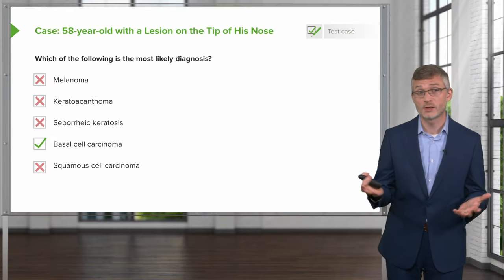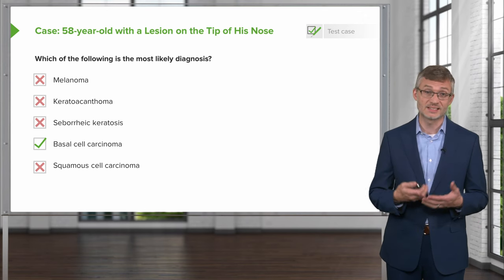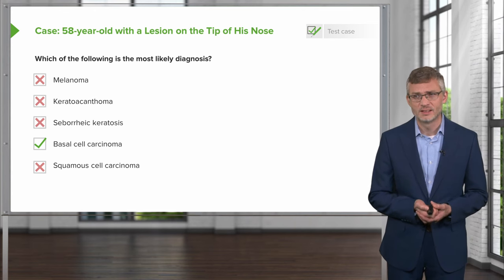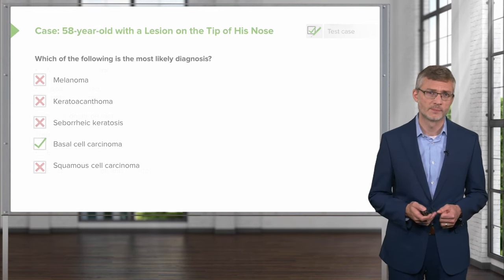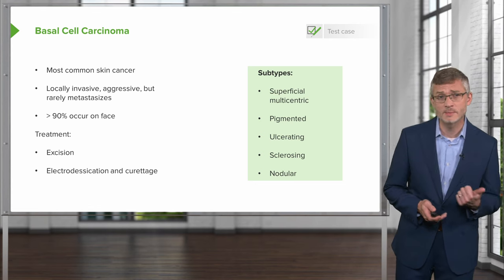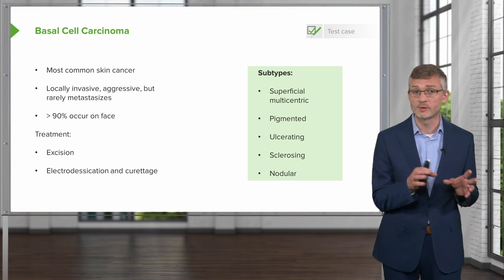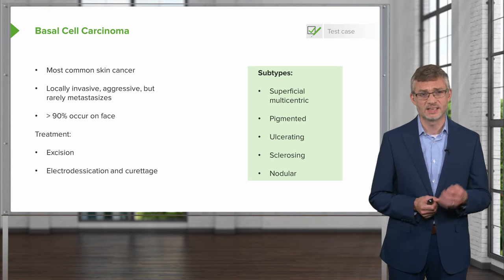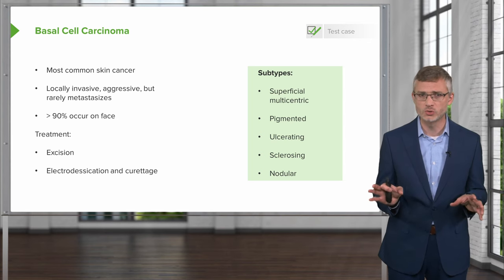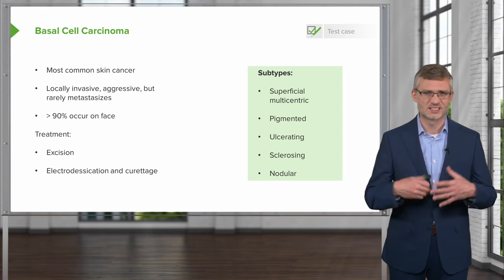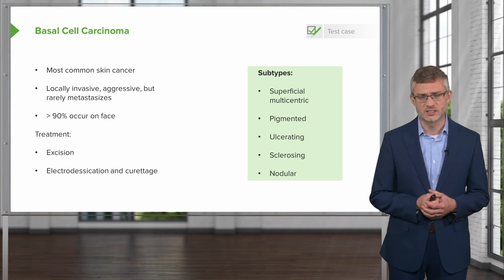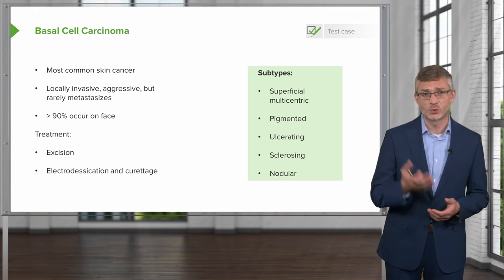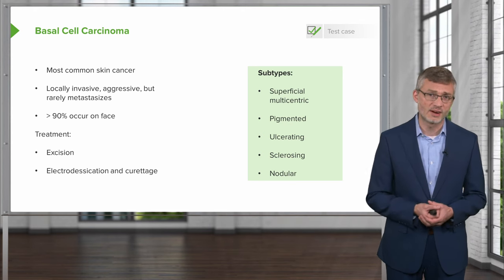With all that information in mind, our patient has a basal cell carcinoma, presumably the nodular subtype. Key points to review: it's the most common skin cancer, locally invasive and aggressive but rarely metastasizes, and 90% of the time it is on the face. Treatment is excision — you don't typically need Mohs surgery since it's not very aggressive in terms of distant metastasis or recurrence. You can also use electrodesiccation and curettage, and there are five different subtypes to remember.